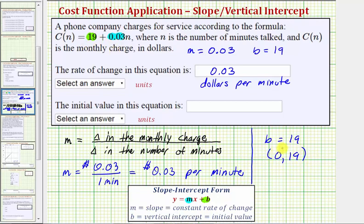Even if someone talks 0 minutes, the cost is still going to be 19 dollars for that month. So we can also refer to this 19 dollars as the fixed cost per month. So to complete the statement, the initial value of this equation is 19, and because this is a function value, the units would be dollars.